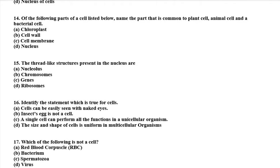Fourteenth question: name the part that is common to a plant cell, animal cell, and a bacterial cell. Question fifteen: thread-like structures present in the nucleus are nucleolus, chromosomes, genes, or ribosomes. The answer is chromosomes — chromosomes are the thread-like structures found in the nucleus.